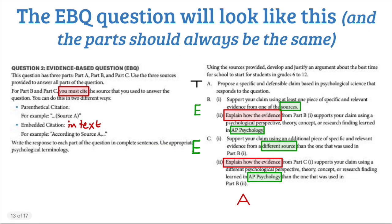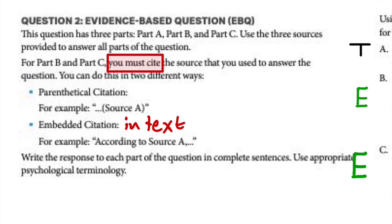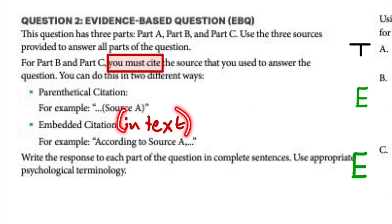Your EBQ should always look like this. It does tell you how to cite the sources — you don't need to cite them by the name of the researchers or the name of the study. You just need to do parenthetical citation, which is just putting in parentheses at the end of a sentence referencing the document, or embedded in-text citation, where you start the sentence with what source you're using — for example, 'according to source A.'